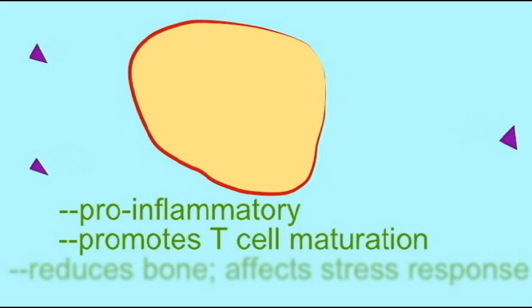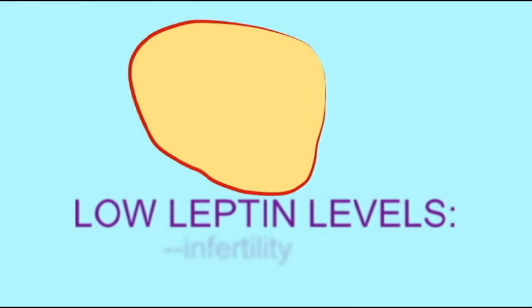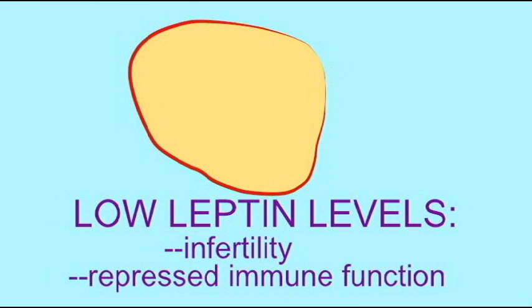It reduces bone. It is involved in stress hormones. So it is essential and the loss of leptin results in infertility and depressed immune function.